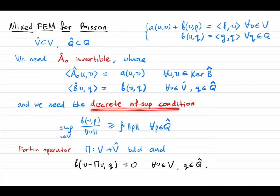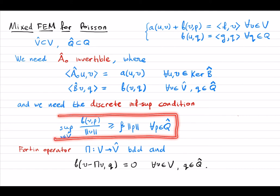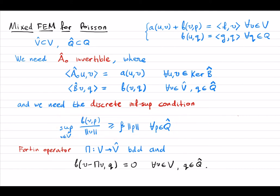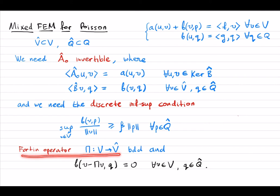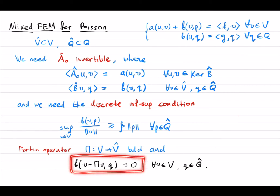We also need the so-called discrete inf-sup condition, that is, the inf-sup condition for B-hat, or equivalently the bounded-below condition for B-hat transpose. One way to check the discrete inf-sup condition is to introduce the so-called Fortin operator, which is a bounded operator from V to V-hat satisfying a certain property.